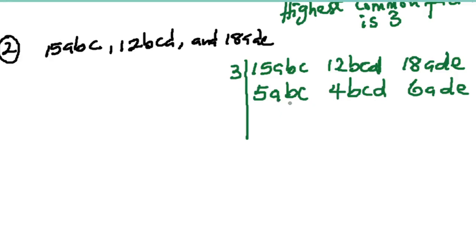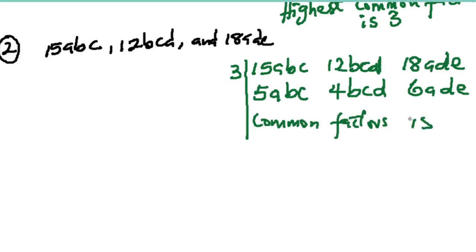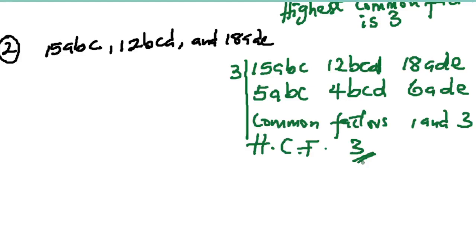Can a divide through all? a is in 5abc and 6ade but not in 4bcd — so a is not a common factor. Can b divide? b is in 5abc and 4bcd but not in 6ade — so b is not good. Can c divide? c is in 5abc and 4bcd but not in 6ade — so no. Therefore the common factors are 1 and 3, and the highest common factor is 3.